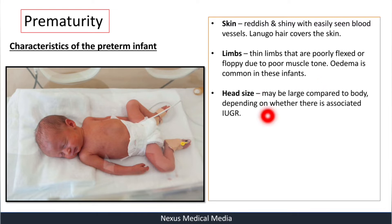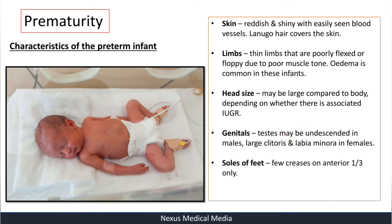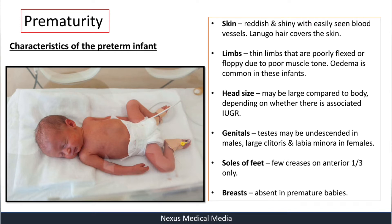The head may be large compared to the body, depending on whether there is associated intrauterine growth retardation. In males the testes may be undescended; in females the clitoris may be large and the labia minora may also be large. The soles of the feet show few creases on the anterior part only. The breasts are usually absent in premature babies.